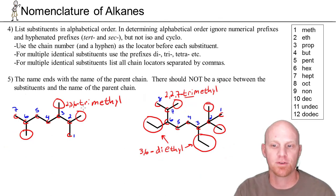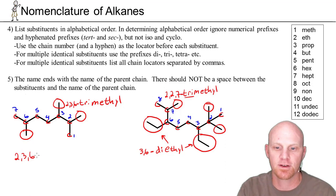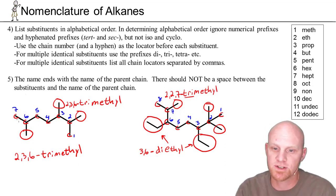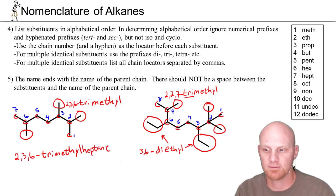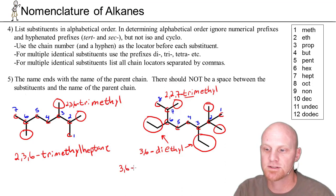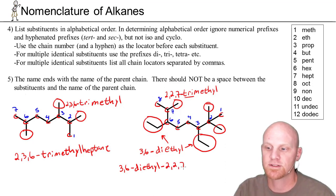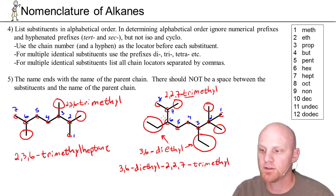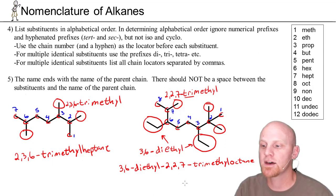For the third example with only methyl groups, we get 2,3,6-trimethylheptane. For the most complex example with two ethyl and three methyl groups, ethyl comes first alphabetically, so the name is 3,6-diethyl-2,2,7-trimethyloctane. Again no space before the parent chain name — we're trying to make the longest word possible.